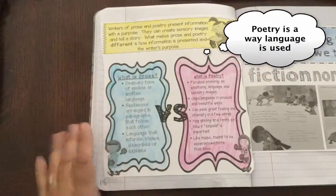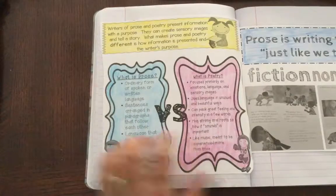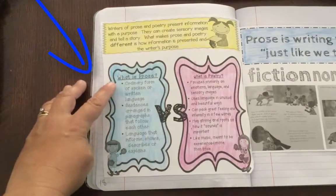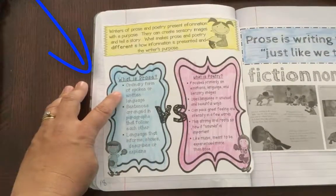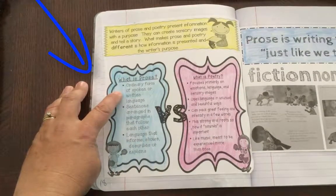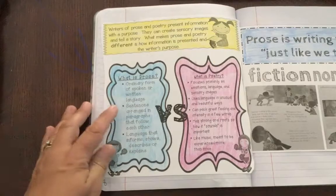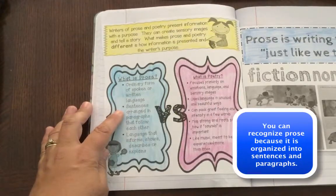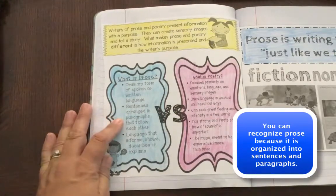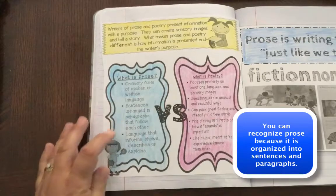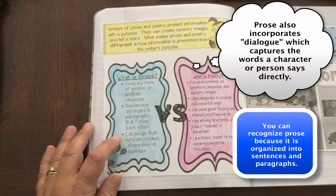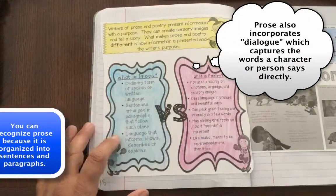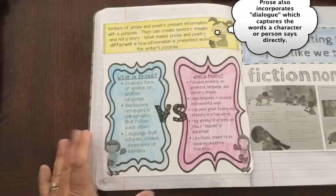When we think about putting the two head-to-head, prose is really just how we talk. It's our ordinary spoken or written language. It's always arranged in sentences or even in paragraphs. It's language that often informs, shows, describes, or explains.